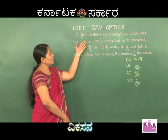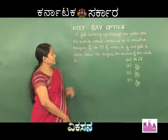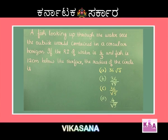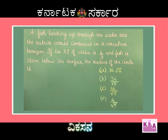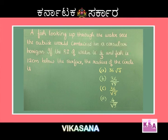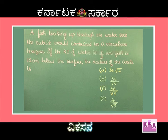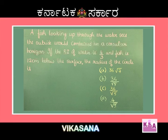Now let us go on to the next question. A fish looking up through the water sees the outside world contained in a circular horizon. If the refractive index of water is 4/3 and the fish is 12 cm below the surface, what is the radius of the circle? Options: A. 36√7, B. 36/√7, C. 36/√5, D. 4/√5.